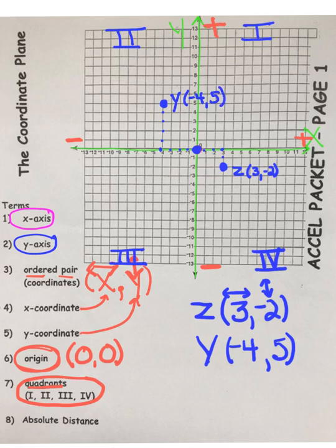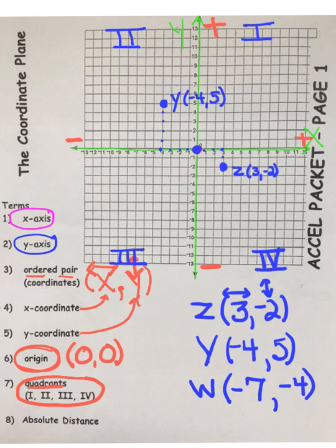Now let's try one more before we conclude this basic video. Let's call this point W. We're going to move negative seven to the left seven units, and then negative four. Placing your pencil point on the origin, let's go seven to the left — one, two, three, four, five, six, over to negative seven — and then down negative four — one, two, three, four. Place a nice solid point at negative seven, negative four, and label it W, negative seven, negative four.